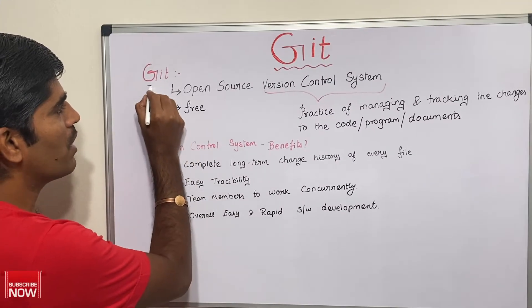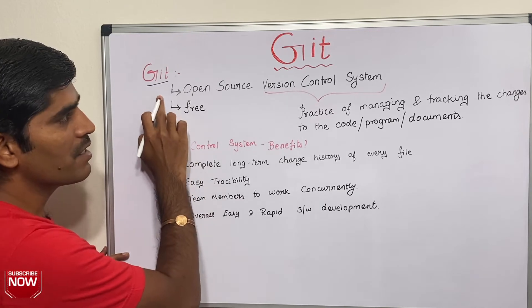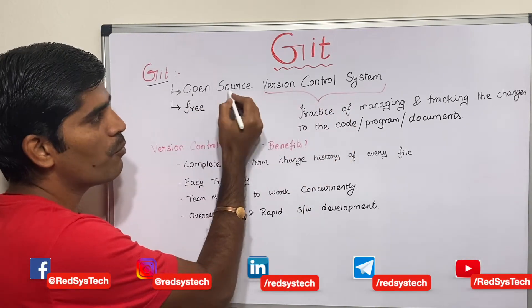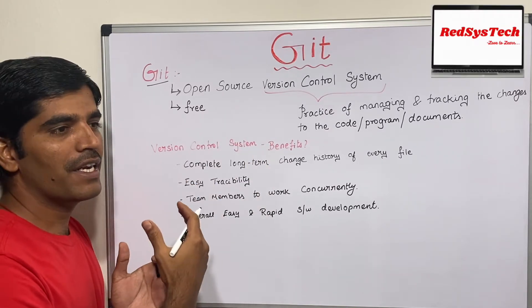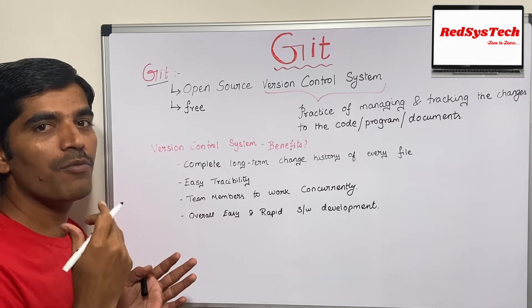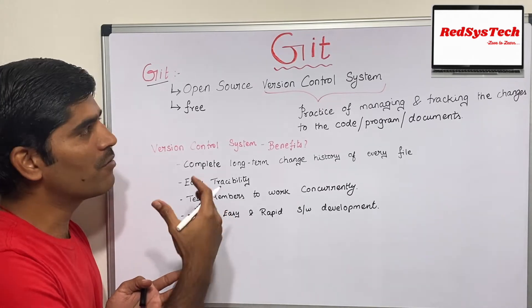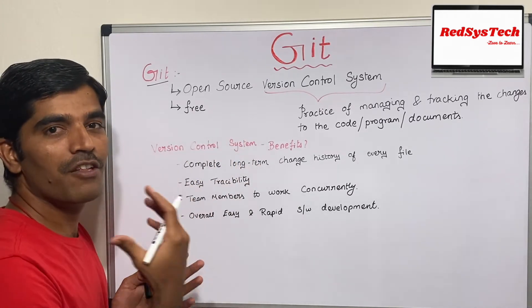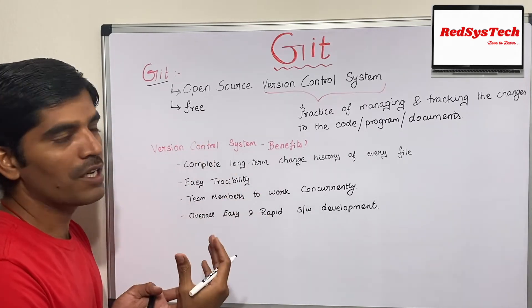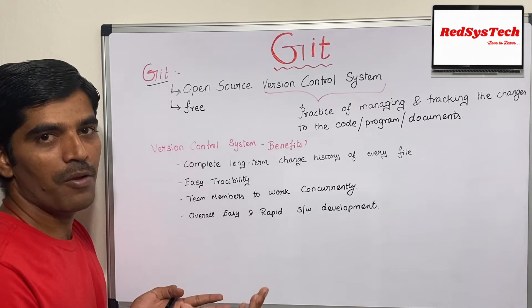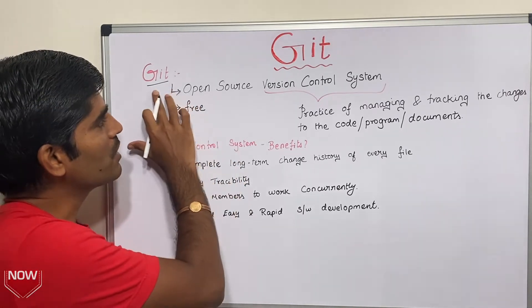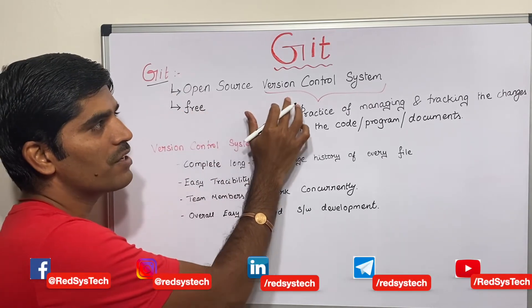First we will see what is Git. Git is nothing but an open source version control system. Open source means it is publicly accessible by anyone — you can contribute your code or functionality and features. A typical example is Java, which is also an open source language. Similarly, Git is also open source.